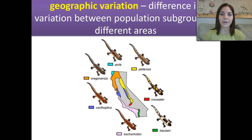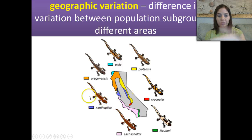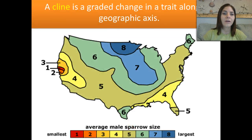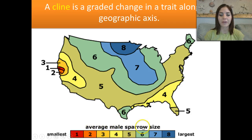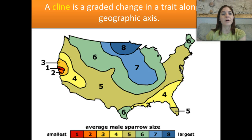We also have geographic variation, which can result in different variation between population subgroups in different areas, which could lead to different selection for mates. For example, females in one area might prefer males with cool yellow spots — even though he could interbreed across regions, if he lacks those yellow spots in another area, no female will want to breed with him. That can lead to speciation. We also have clines — a greater change in a trait along a geographic axis. Looking at average male sparrow size, ranging from one (smallest) to eight (largest), in different geographic locations females might want a larger or smaller sparrow, and you might start to see speciation occur.